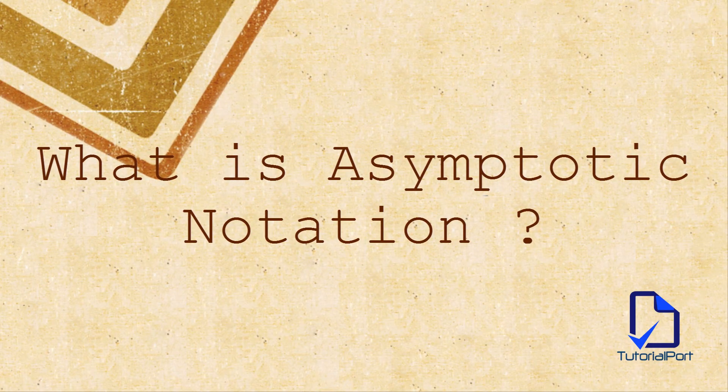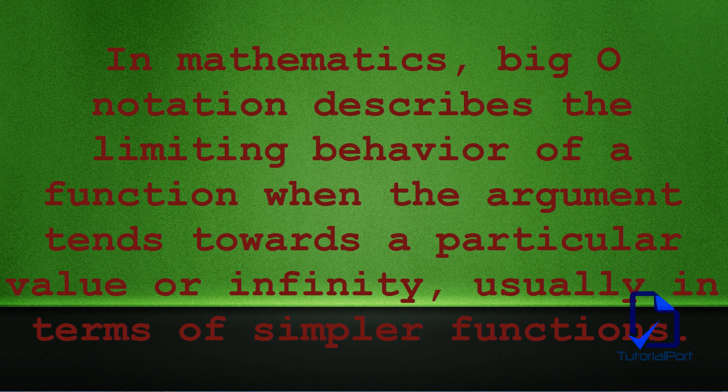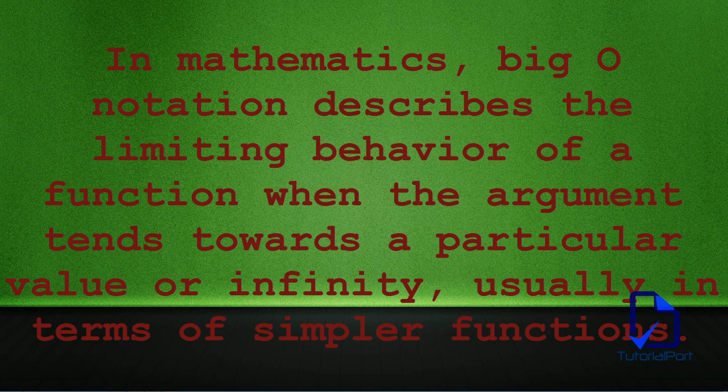What is asymptotic notation? In mathematics, Big O notation describes the limiting behavior of a function when the argument tends towards a particular value or infinity.